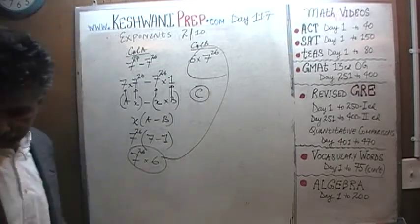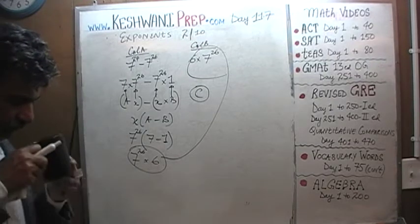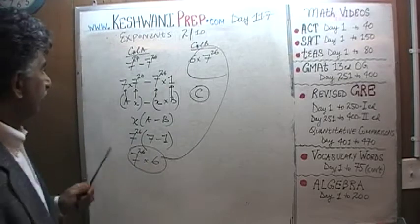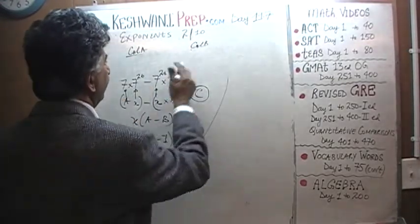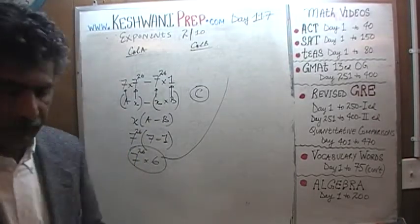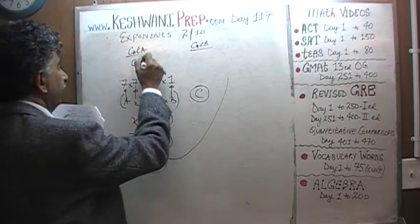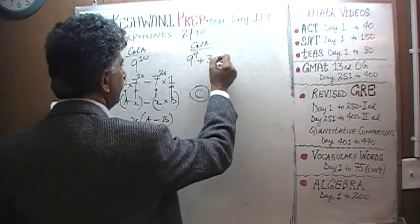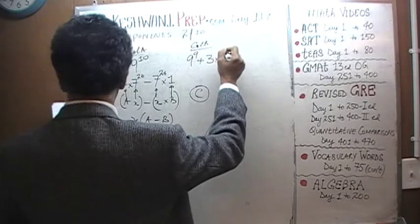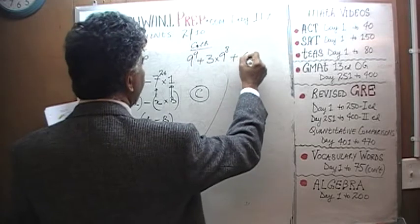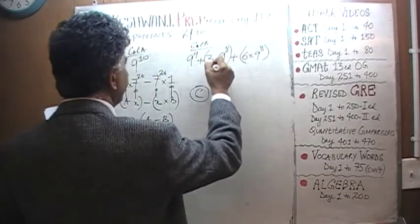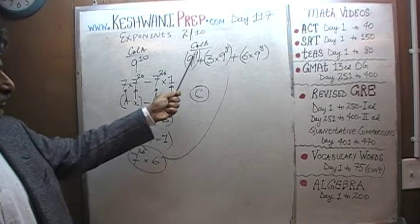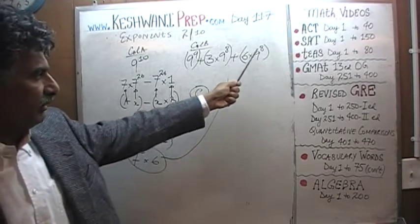Want to do one more? Let's do one more. Again, as soon as I finish writing the problem on the blackboard, pause the video. In the first column we have 9 raised to 10. In the second column we have 9 raised to 9 plus 3 times 9 raised to 8 plus 6 times 9 raised to 8. Do it yourself.